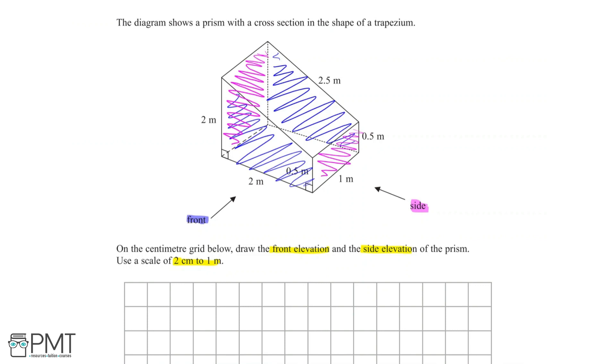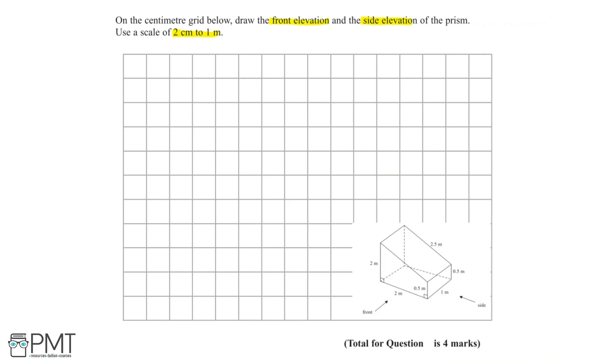We'll start with the front elevation. Looking at the front elevation, we can see that we have a trapezium which is the same for both sides. The front elevation and the side directly behind it is an identical trapezium. We have a screenshot of the diagram in the corner for reference.